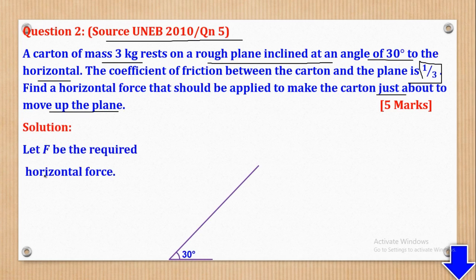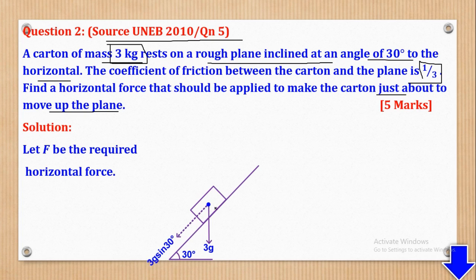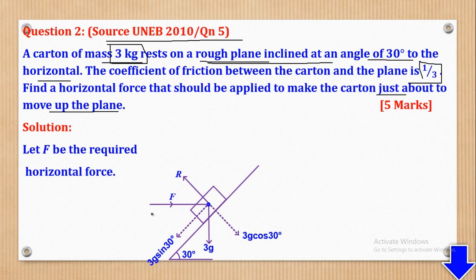We can place our particle on an inclined plane of 30 degrees. The mass is 3 kilograms, therefore the weight will be 3G. The component of this weight parallel to the plane will be 3G sin 30 degrees, and the component perpendicular to the plane will be 3G cos 30 degrees. The normal reaction will be capital R. The horizontal force required is capital F, which is parallel to the horizontal base. We also resolve that force: parallel to the plane gives F cos 30 degrees, and perpendicular to the plane gives F sin 30 degrees.